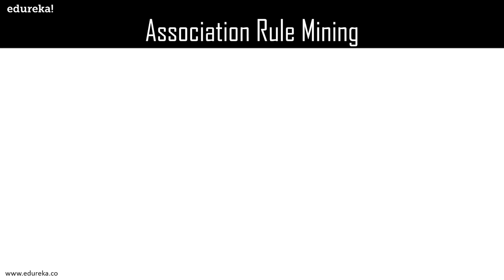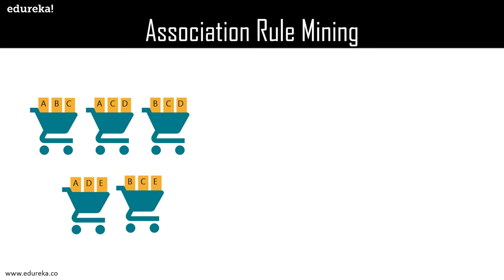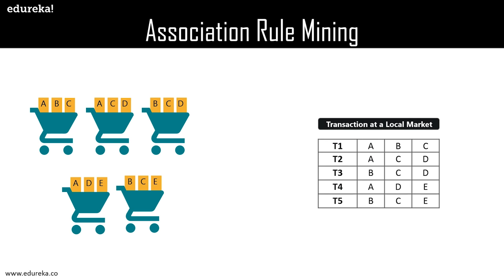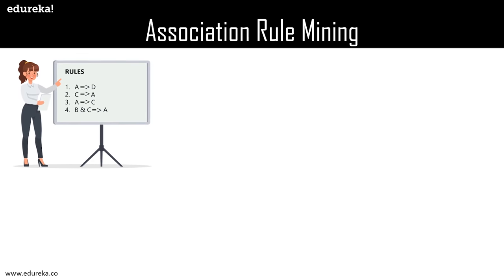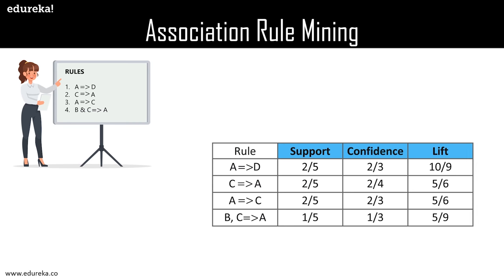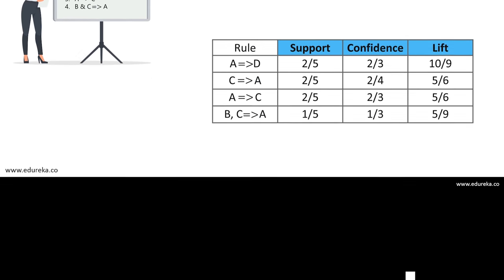Let's look at a simple example of association rule mining. Suppose we have items A, B, C, D, and E, and transactions T1 through T5: T1 has A, B, C; T2 has A, C, D; T3 has B, C, D; T4 has A, D, E; and T5 has B, C, E. We create association rules such as A → D, C → D, and B, C → A — meaning if a person buys A they are likely to buy D, and if a person buys B and C they are likely to buy A. We then calculate the support, confidence, and lift using these rules, as shown in the table.